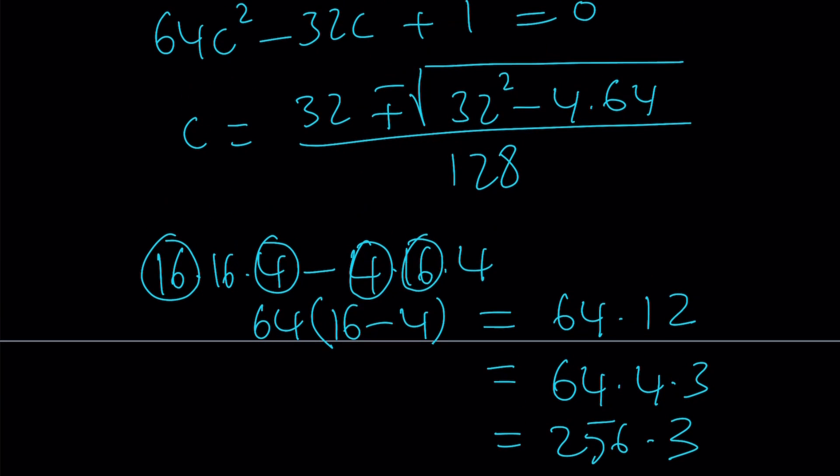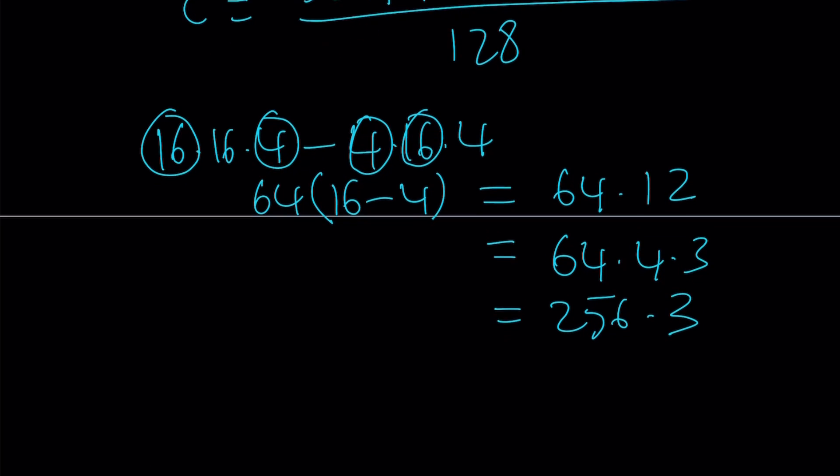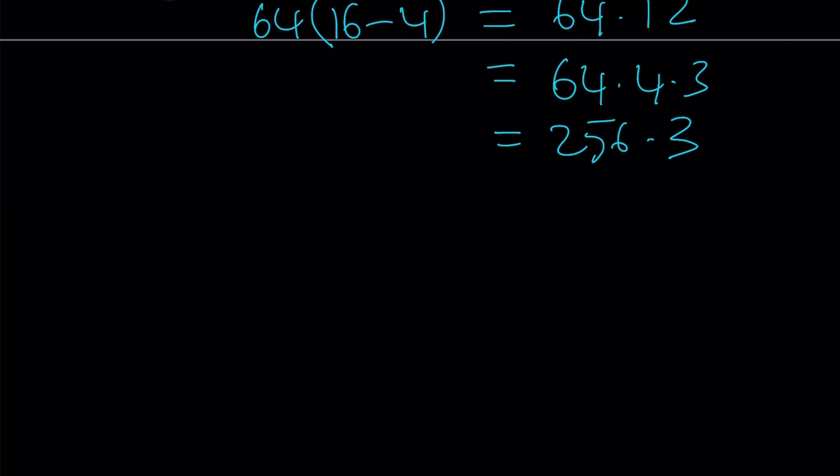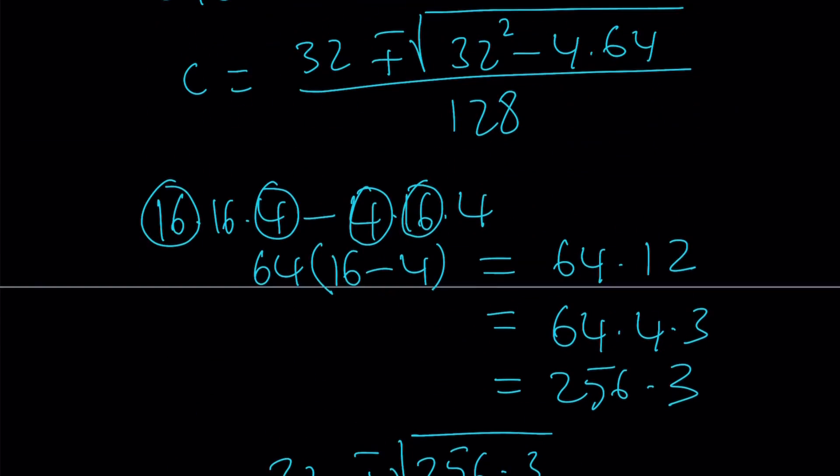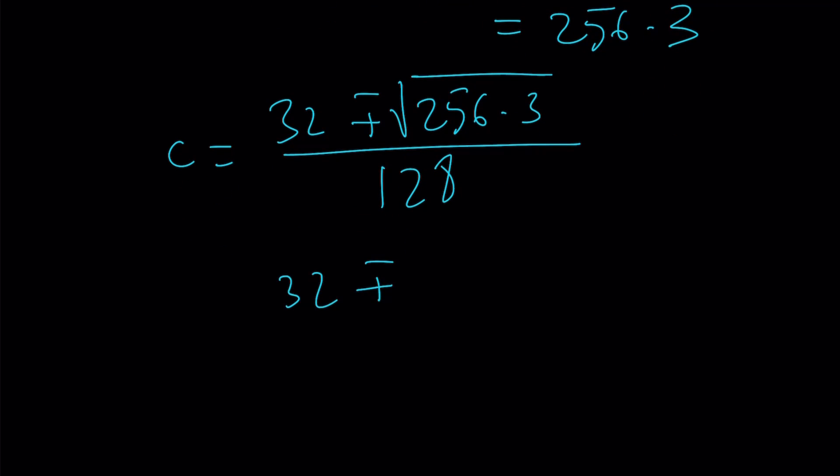So that expression turns into a perfect square times a prime number or whatever, which is easy to take care of. Now let's go ahead and plug it in. Then we have now the square root of 256 times 3. I could easily take it out, but I just wanted to take an extra step here. Let me erase that. It's too crowded here. So let's go ahead and write it here. C equals, uh-oh, I'm still on the eraser. 32 plus minus the square root of 256 times 3 divided by 128. That was the bottom, right? Okay, great. So now 256, the square root of 256 is 16, right?